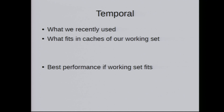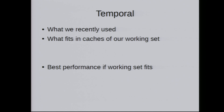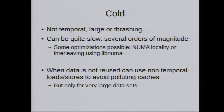Let me discuss the different cache states in more detail. Temporal means recently used — what fits in the caches and your working set. It's pretty hard to figure out in advance what fits in your working set because cache models are pretty complicated. Usually you have to try to keep things small, then tune it. The best way is to have a tunable knob you can adjust after writing the program, because it's really hard to predict your temporal working set in advance. The best performance comes when most of your frequently accessed data is temporal.